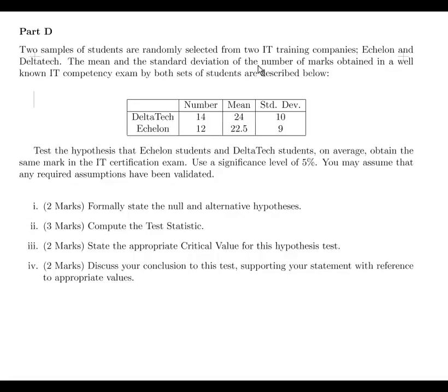Okay, in this presentation we are looking at a hypothesis test. Essentially, two samples of students are randomly selected from two IT training companies. So it's a two-sample test. We have one company called Echelon and the other company called DeltaTech. And essentially what we're looking at here is some sort of well-known IT competency exam. So they're both doing the same test with two different training companies.